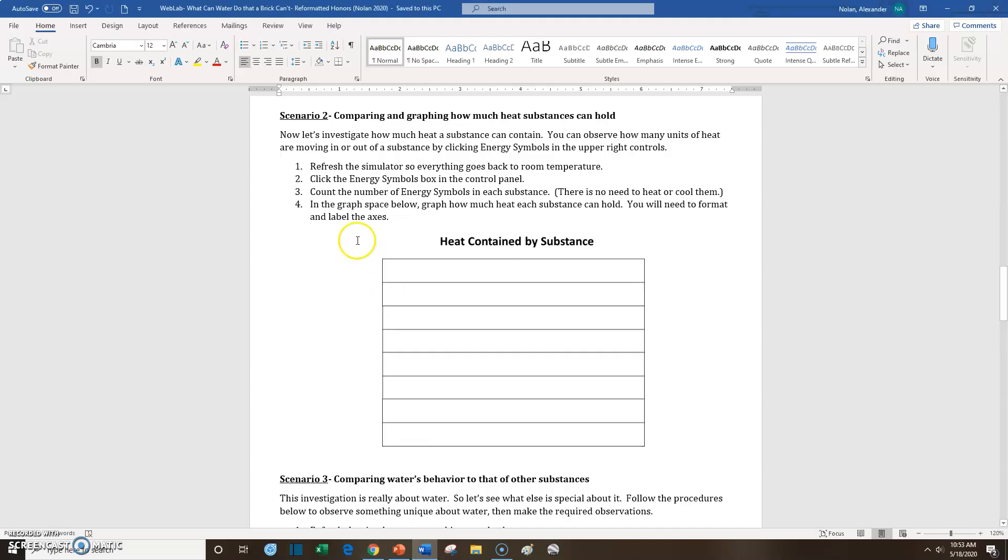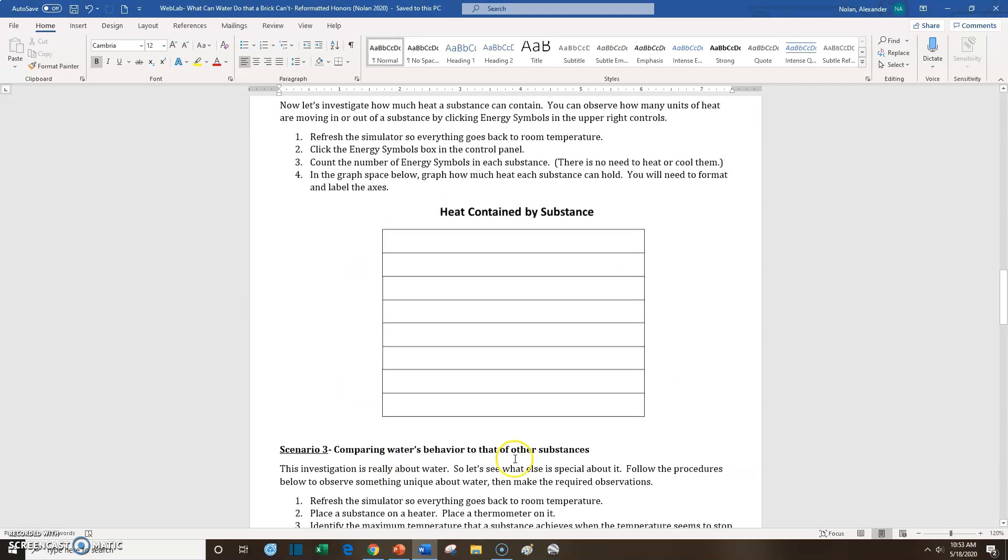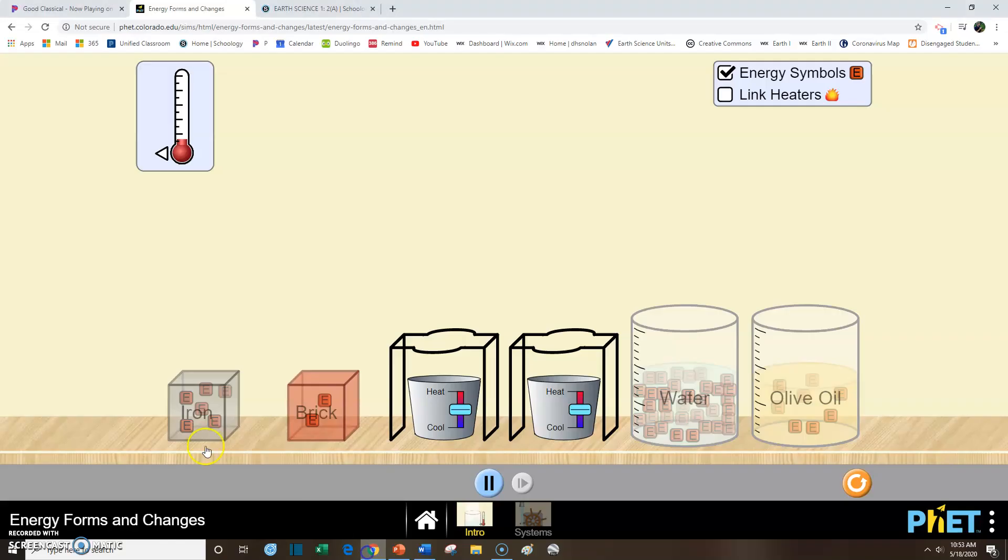So we see these energy symbols. What you're going to do here is you're actually going to count how many energy symbols there are in each substance, and then you're going to graph it. I already showed you in another video how to create a graph online and how to edit that. So if you'd like, you can take a screenshot right now, or you can pause it, and you can count how many of each little red square.